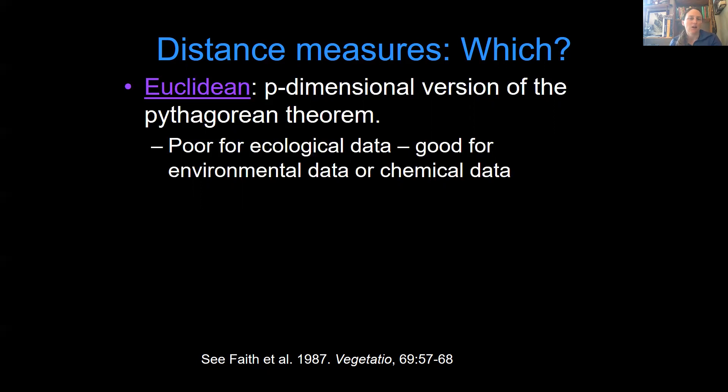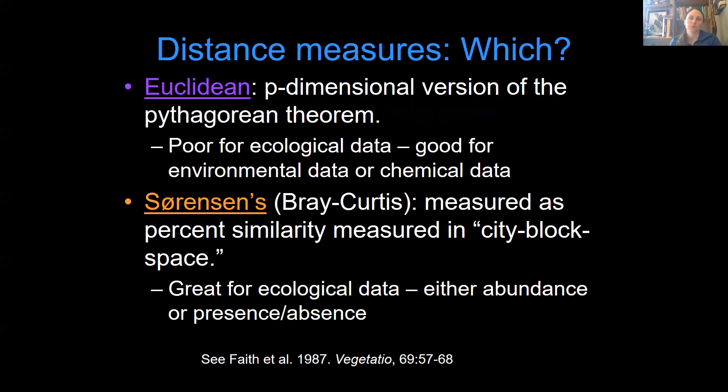So instead, for most ecology questions and community analysis, we're going to use what's called Sorensen's or the Bray-Curtis distance measure. And this is a distance measure that's measured as a city block. So instead of measuring the hypotenuse between two points, it measures the down and over distance. For some reason, you can read about it in this paper, Faith et al. from 1987, if you're really interested. For some reason, it works better for ecological data. And you can have your data either in terms of the abundance and numbers of organisms or their presence or absence in your community.